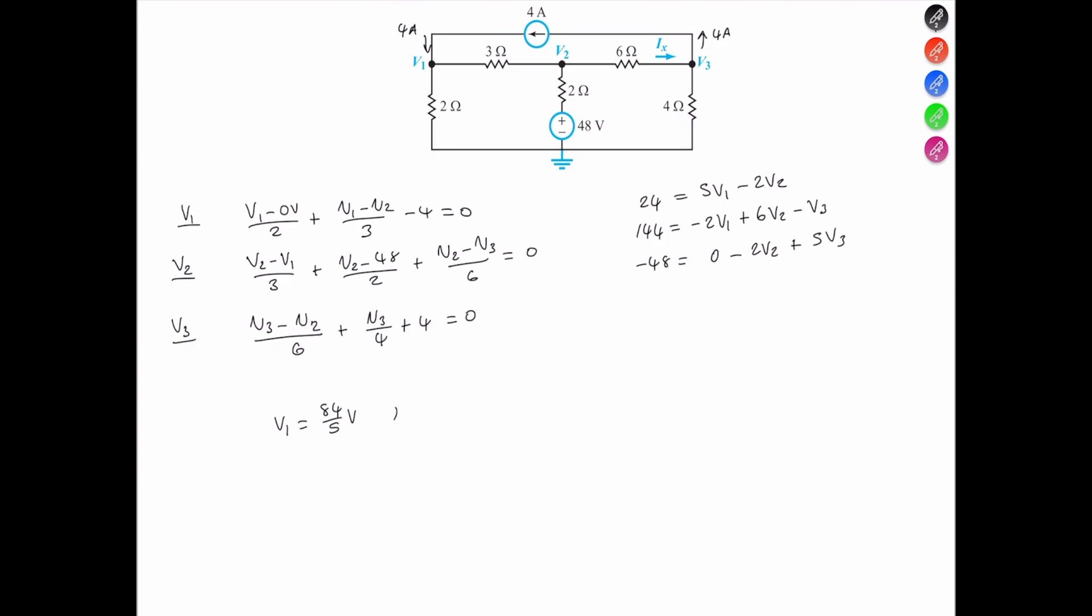V2 equals 30 volts, and V3 is equal to 12/5 volts.